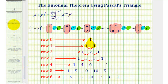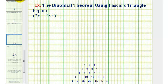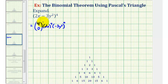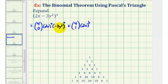Going back to our example, the binomial is raised to the fourth power. The first term will have a factor of 4 choose 0, then 4 factors of 2x, and 0 factors of negative 3y². For the next term we have 4 choose 1, giving 2x to the third and 1 factor of negative 3y². So for each successive term we lose a factor of 2x and gain a factor of negative 3y².